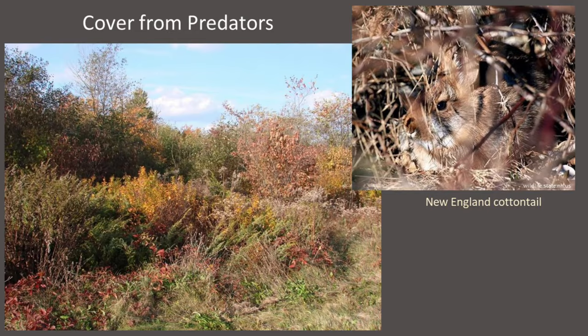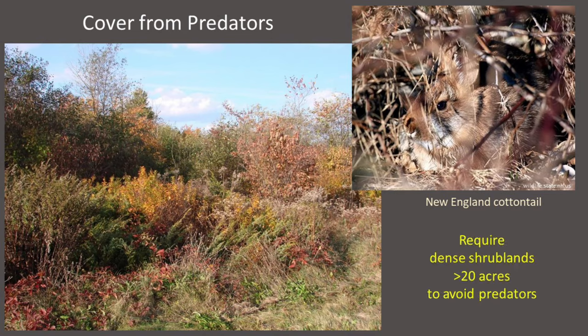Some wildlife species that are especially vulnerable to predators select very specific habitat types that provide dense protective cover. Perhaps the best example in New England is the New England cottontail, which requires dense shrublands greater than 20 acres in size so that the rabbits have a large area of cover enabling them to get away from the edges where predators are most likely to find them. Just having shrub cover isn't enough — this species needs a huge area of shrub cover to occur, survive, and reproduce.